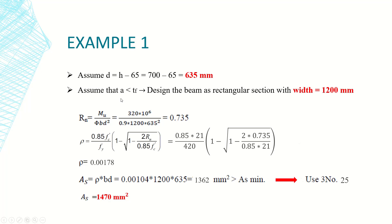the neutral axis will pass in most cases in the t flange. So we will assume that a is less than t flange, so we will design the beam as rectangular section with width equal to 1200 millimeters. So step number one.